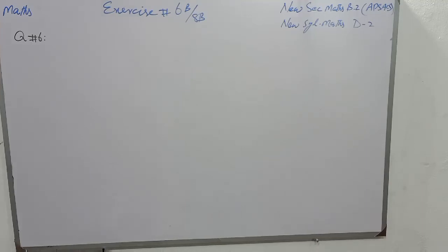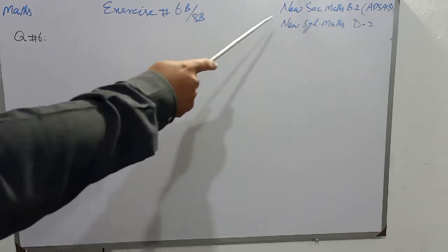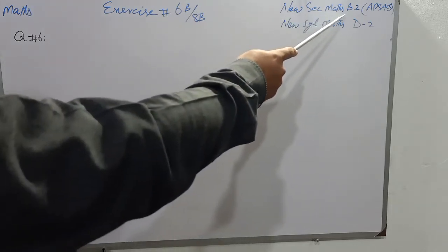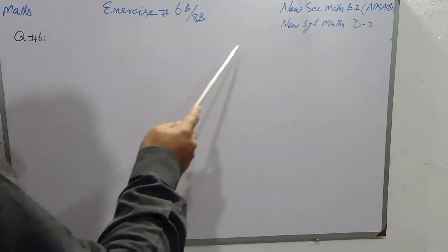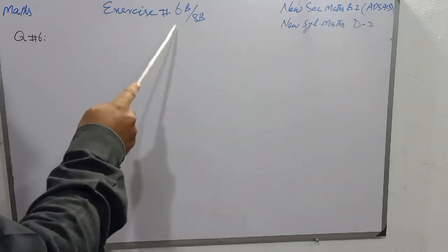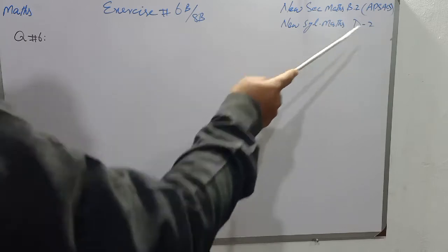Starting with the name of Allah Almighty, who is the master of the Day of Judgment, and blessings upon the Prophet Muhammad sallallahu alayhi wa sallam. Dear students, Mathematics Exercise 6B for New Quanti Mathematics Book 2, Class 7, and Exercise 8B for New Labus Mathematics D2.